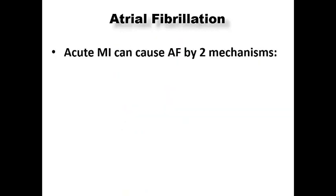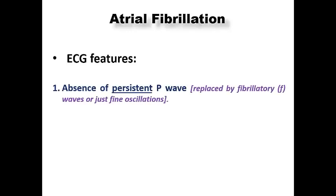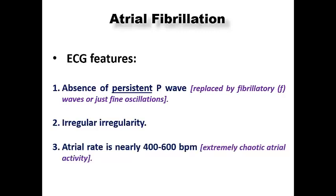Acute MI can cause AF by two mechanisms. First, atrial infarction can create a substrate liable to perpetuation of atrial fibrillation. Second, increased LV end-diastolic pressure in extensive infarction results in increased left atrial pressure, which can act as a trigger for AF in the presence of a substrate. The ECG features of atrial fibrillation include absence of persistent P waves replaced by fibrillatory waves — either coarse or fine — irregular irregularity, and atrial rate of 400 to 600 bpm due to extremely chaotic atrial activity.